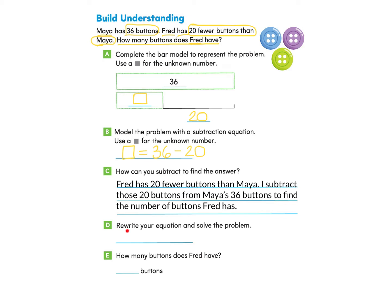Part D asks us to rewrite your equation and solve the problem. Starting with Maya's 36 buttons, I take away 20. When I compute 36 take away 20: in the ones column, 6 take away 0 is still 6, and in the tens column, 3 tens take away 2 tens is 1 ten. So my answer is 16. Fred has 16 buttons.